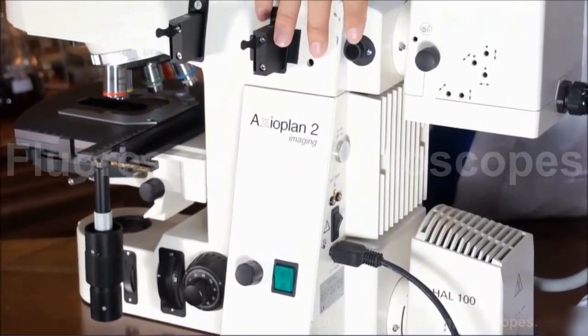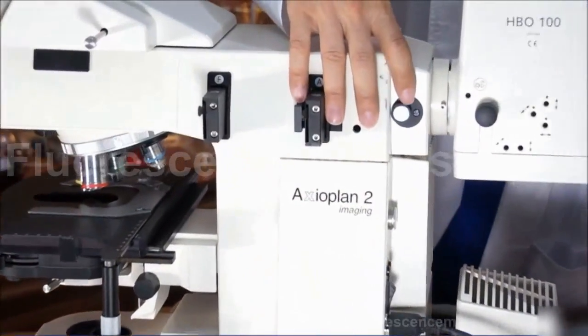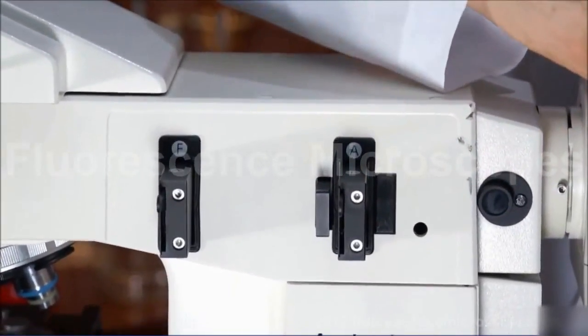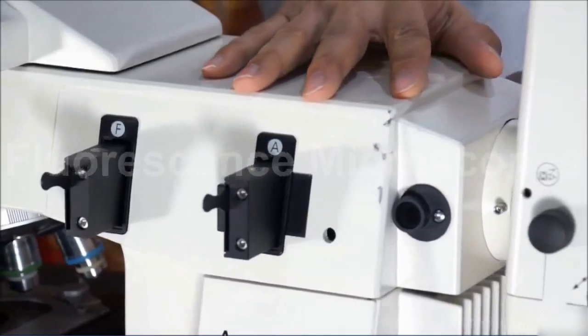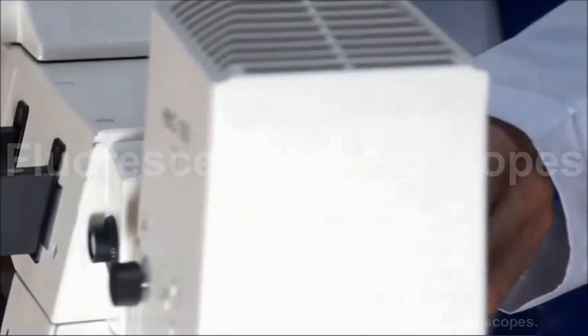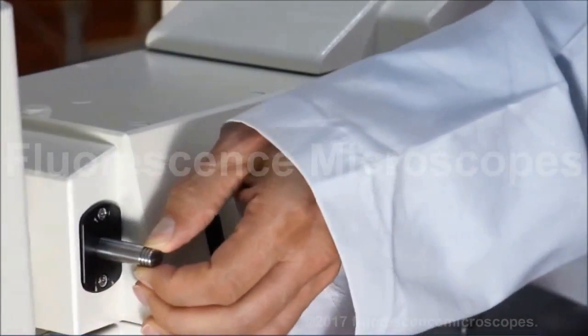This is a viewing aid. You're going to look into this port to center your mercury bulb. And there's a button or a pull lever on this other side that you're going to pull out.